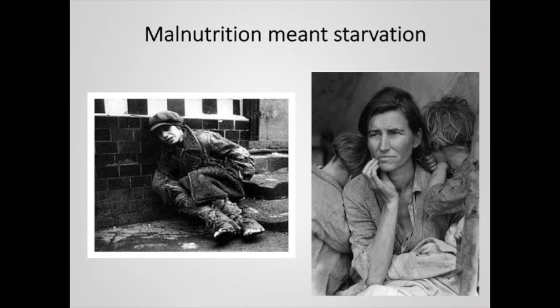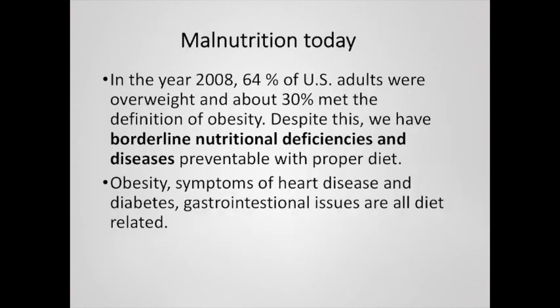Nowadays we have a bigger issue in much of the developed world. We still have starvation and nutrient deficiencies in the developing world, but in the developed world we have obesity epidemics. For instance, in 2008, 64% of U.S. adults were overweight and 30% met the definition of obesity. Despite this, we have had borderline nutritional deficiencies and diseases preventable with proper diet — so we have plenty of calories but we're not necessarily getting enough vitamins, minerals, or even protein sometimes.